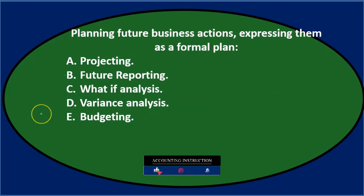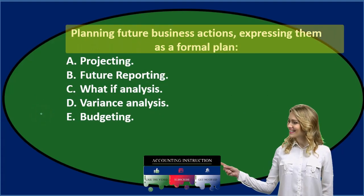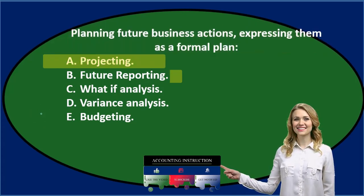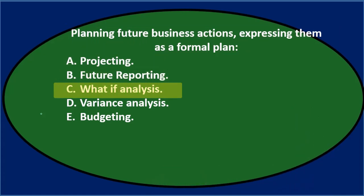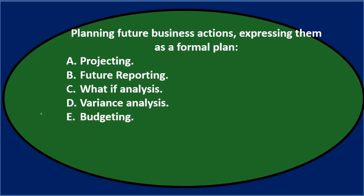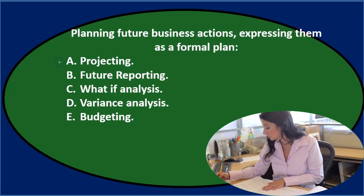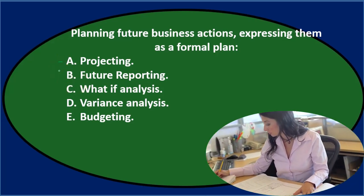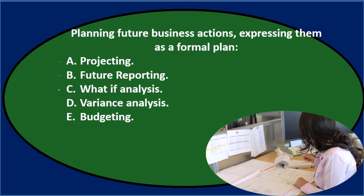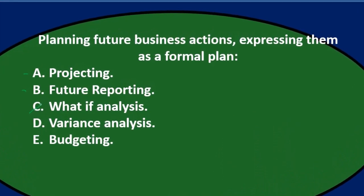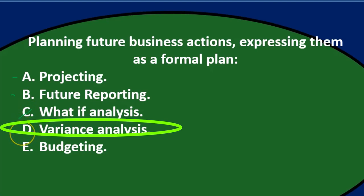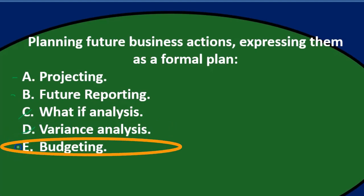Next question: 'Planning future business actions, expressing them as a formal plan.' Answer choices are: A — projecting, B — future reporting, C — what if analysis, D — variance analysis, E — budgeting. Using process of elimination: C, 'what if analysis,' sounds informal — eliminate it. D, 'variance analysis,' relates to actual versus expected differences — not quite right here. We're left with A, B, and E.